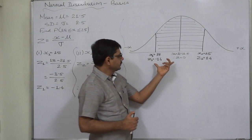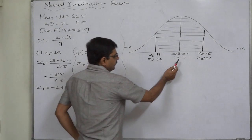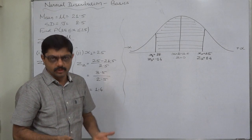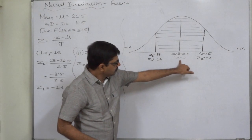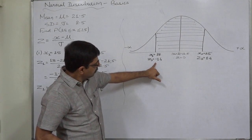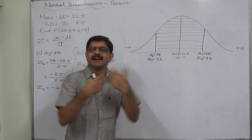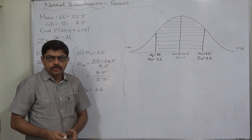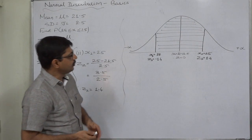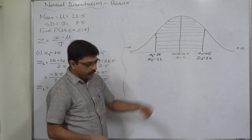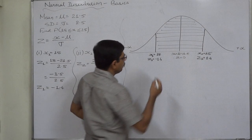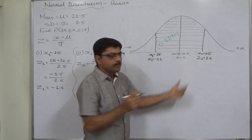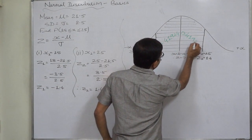For the standard normal variate z, the area between z = 0 and any value of z is always positive — area can never be negative. Using the readily available table of area under the normal curve, the area between z = 0 and z = 1.4 is 0.41924. The same area applies to both sides, so the area from z = 0 to z = −1.4 is also 0.41924.